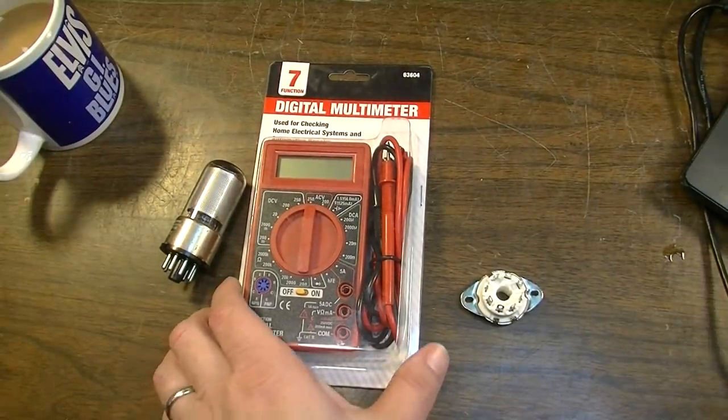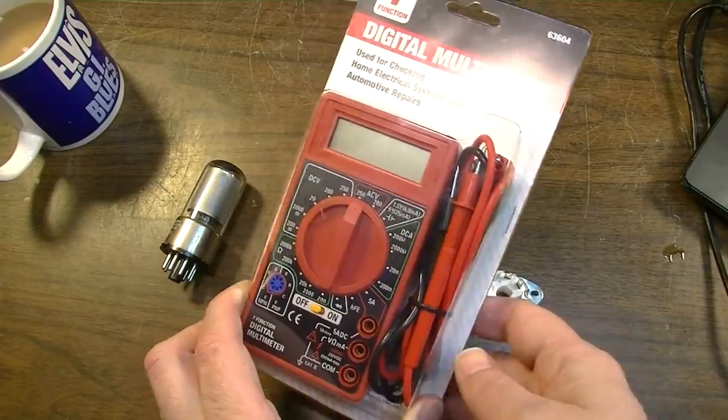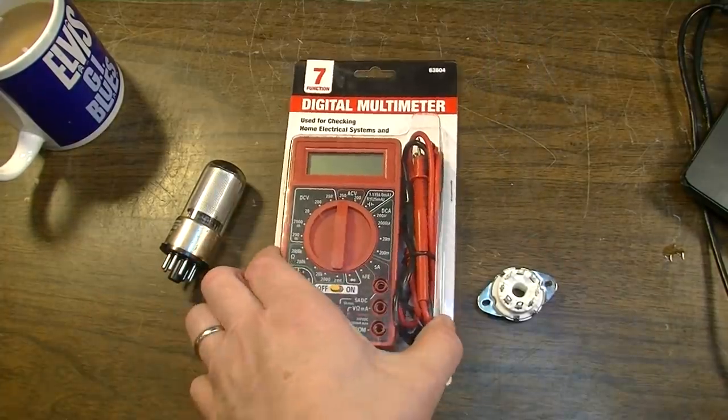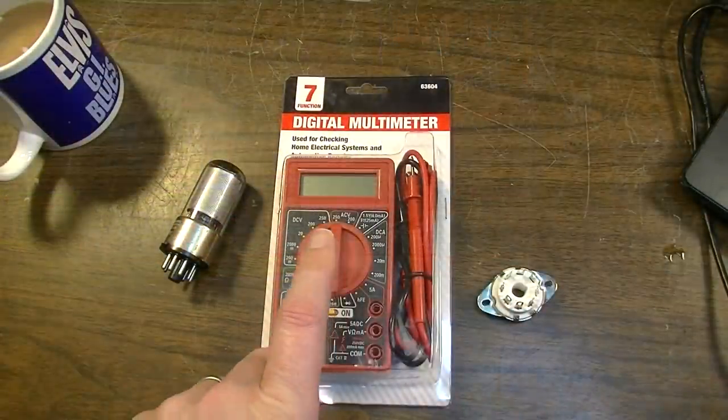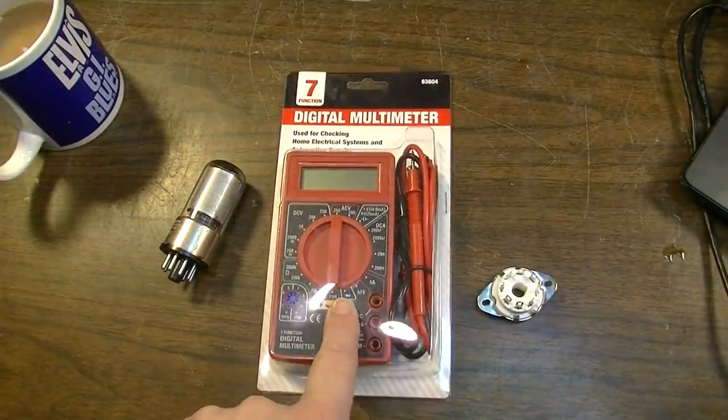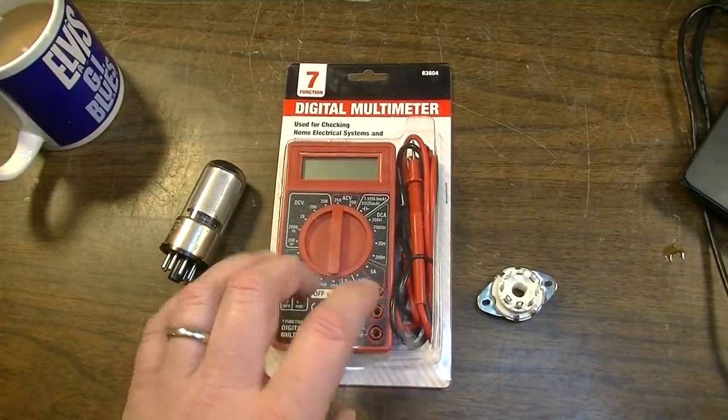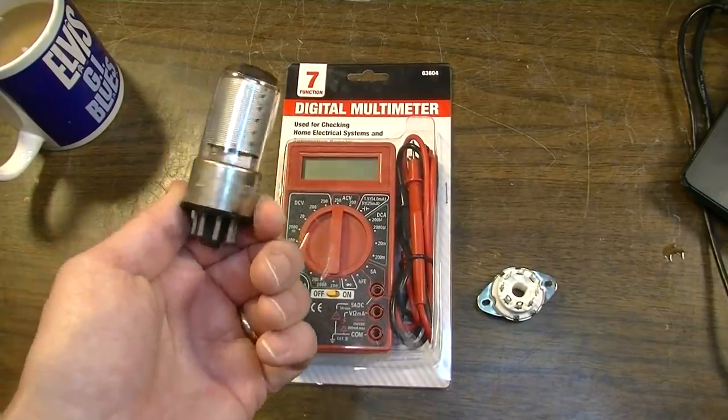First, you might notice that this digital multimeter is one that you can get from Harbor Freight. If you've watched one of my videos on shopping at Harbor Freight, you will recognize this. You can actually get these multimeters a lot of times for free. I'm going to show you how to turn this and the probes that comes with it into a set of bias probes. And the first thing we need to do, we need to find ourselves an old tube.